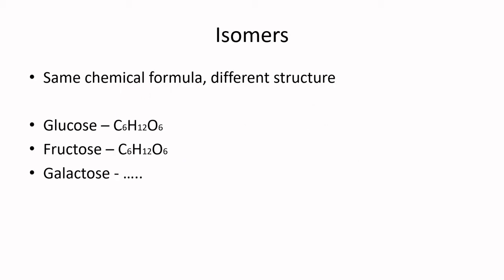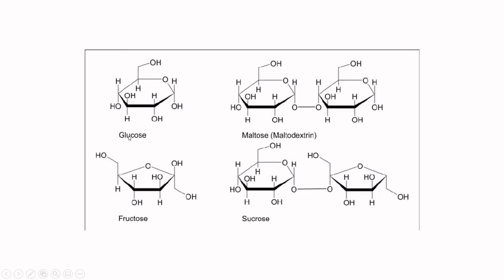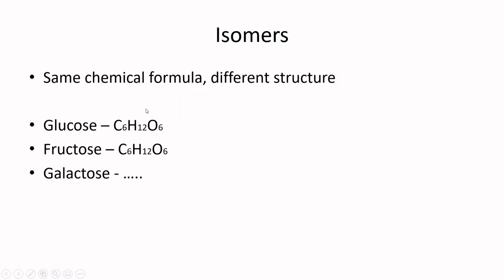Each of those sugars comes from the same chemical formula but has a different structure. Glucose is C6H12O6, fructose is C6H12O6, and galactose is also C6H12O6. Sucrose, as you remember, is a disaccharide, so that would be C12H24O12 — just multiplying everything by two.